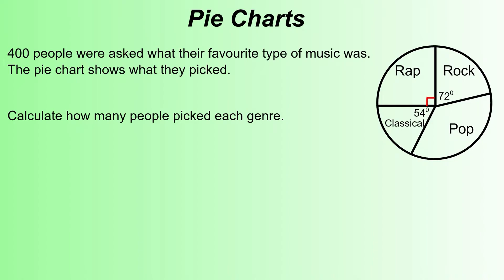We've got the first question looking at people's favorite type of music. 400 people were asked what their favorite type of music was. The pie chart shows what they picked. Calculate how many people picked each genre. We're given all the key information we need. The full pie chart represents 400 people, and we're going to split those 400 people into each category to find out how many people actually picked each category.